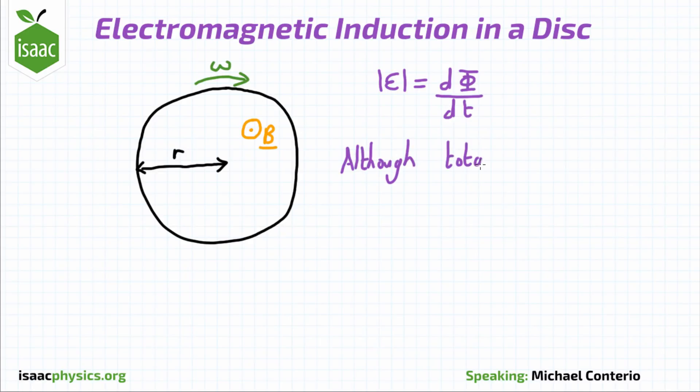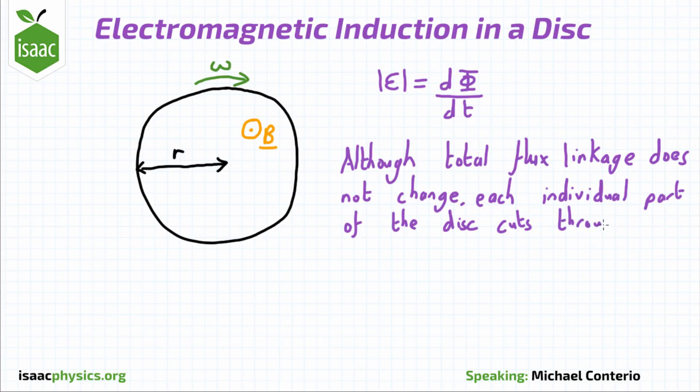Although the total flux linkage of the disk doesn't change as it rotates, we can imagine it consisting of lots of individual wires from the centre to the edge, which are rotating about and cutting through magnetic field lines, which means there must be an EMF induced across them.